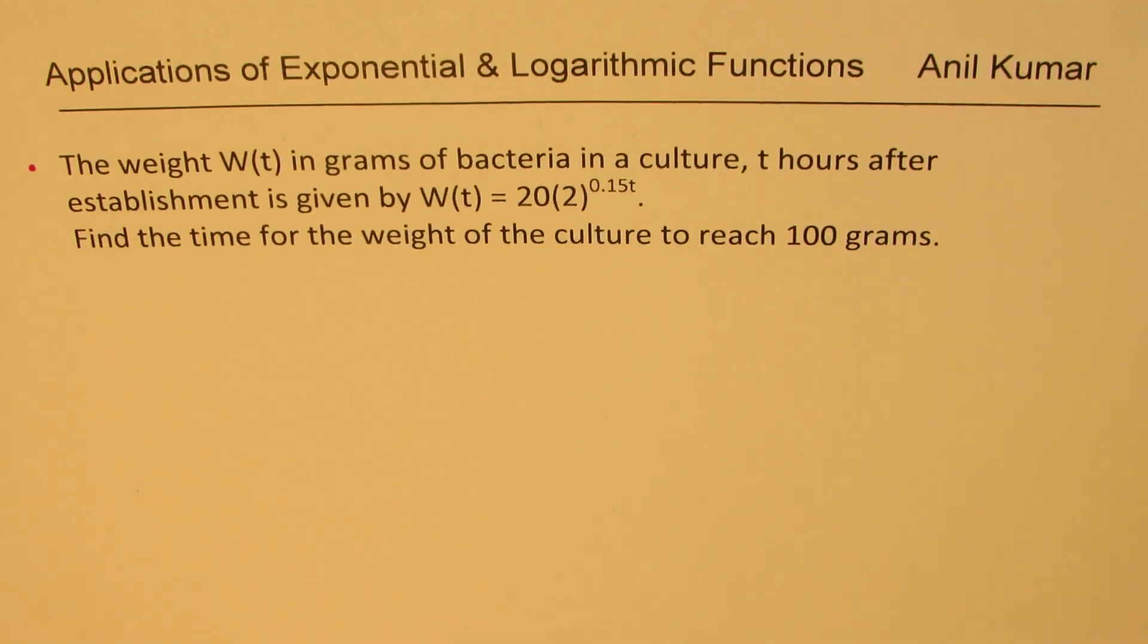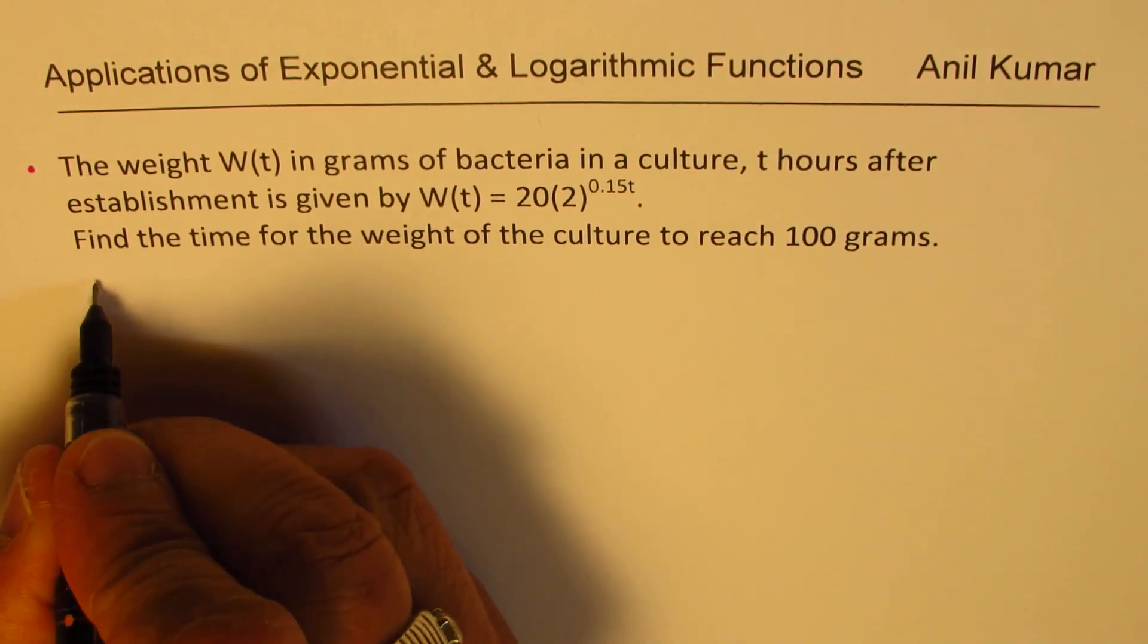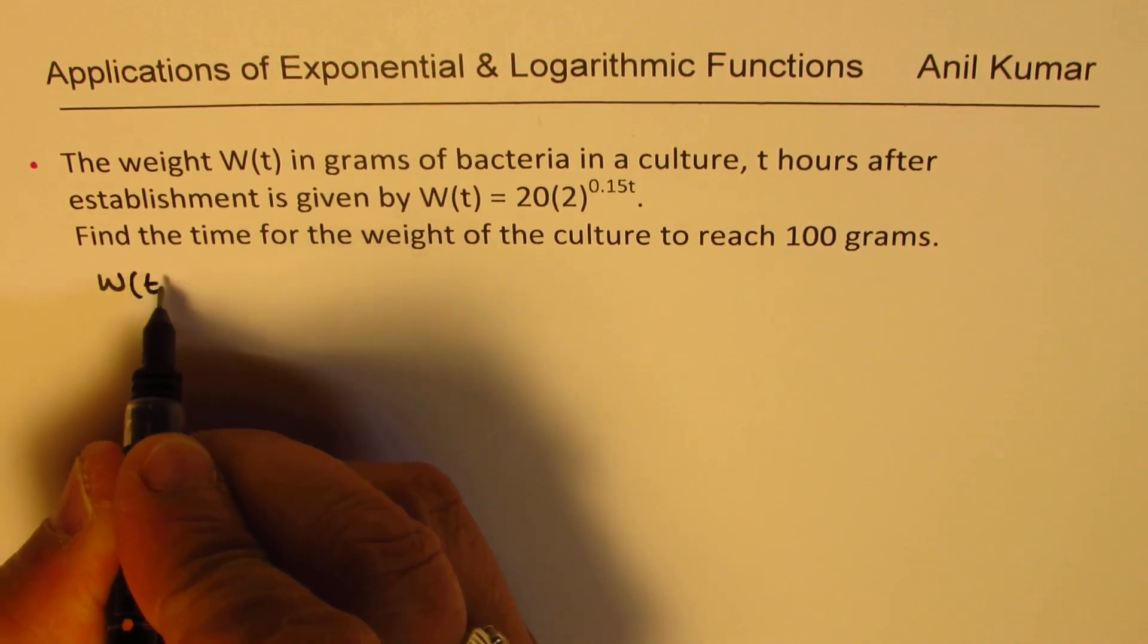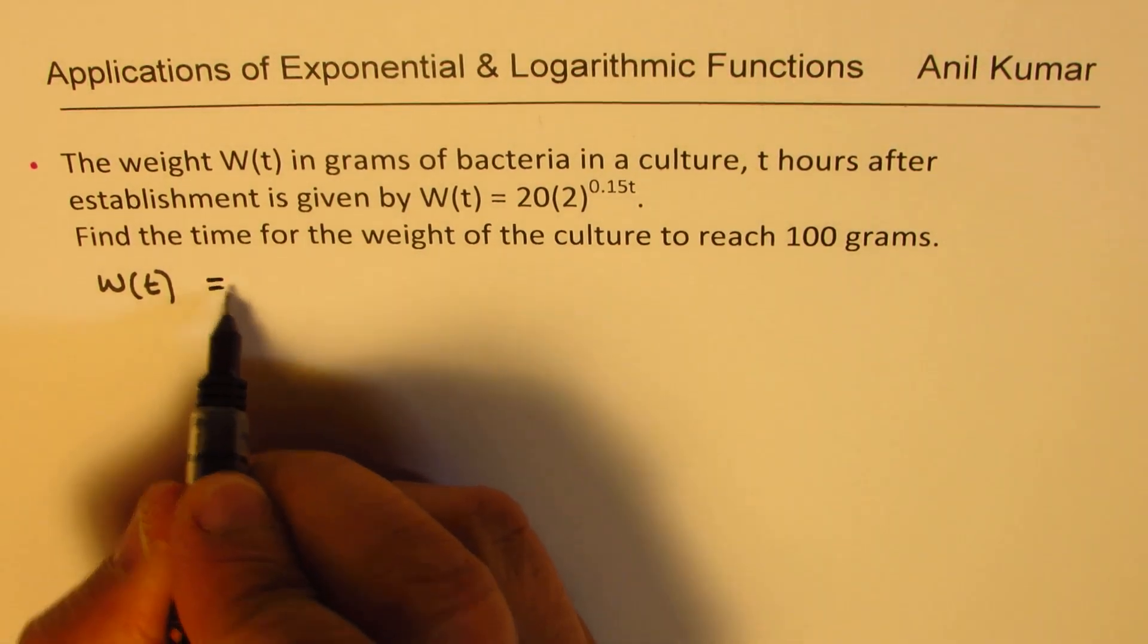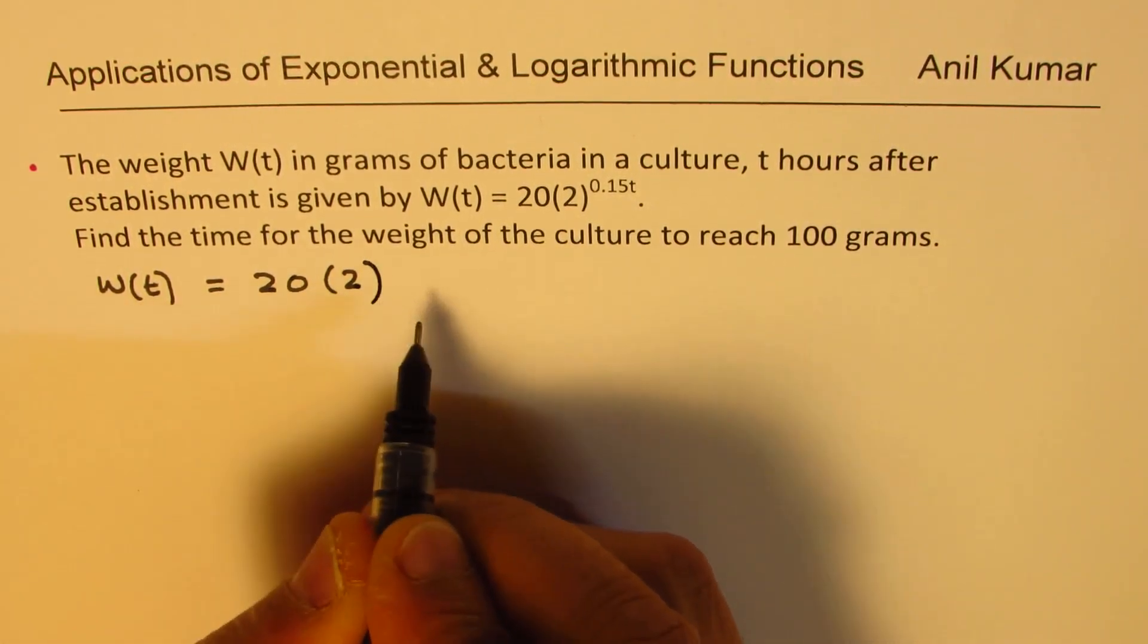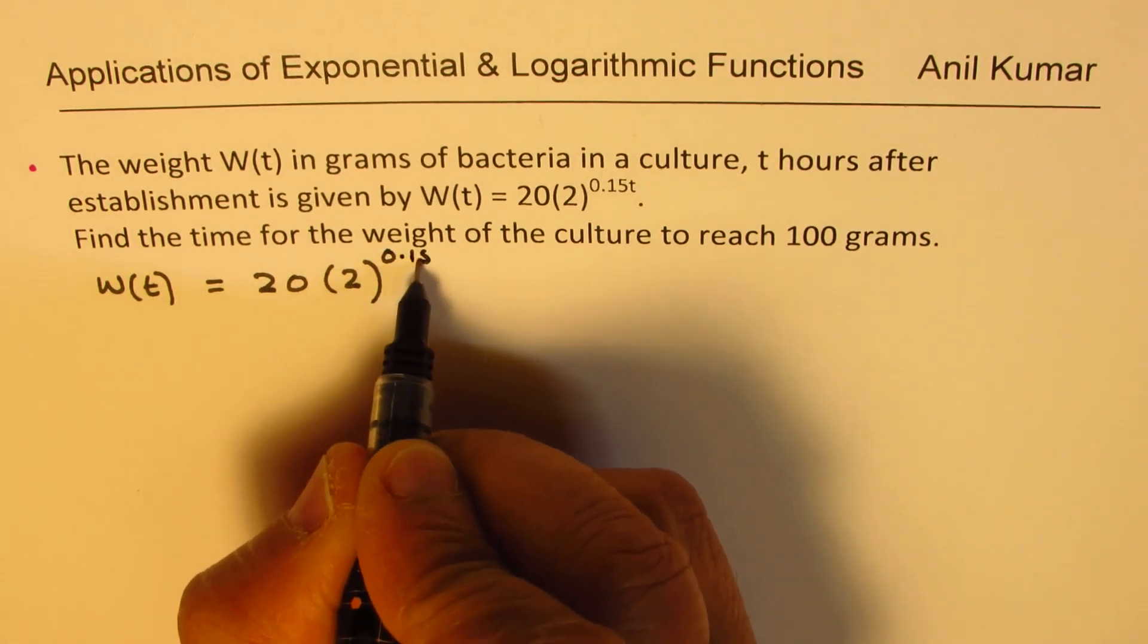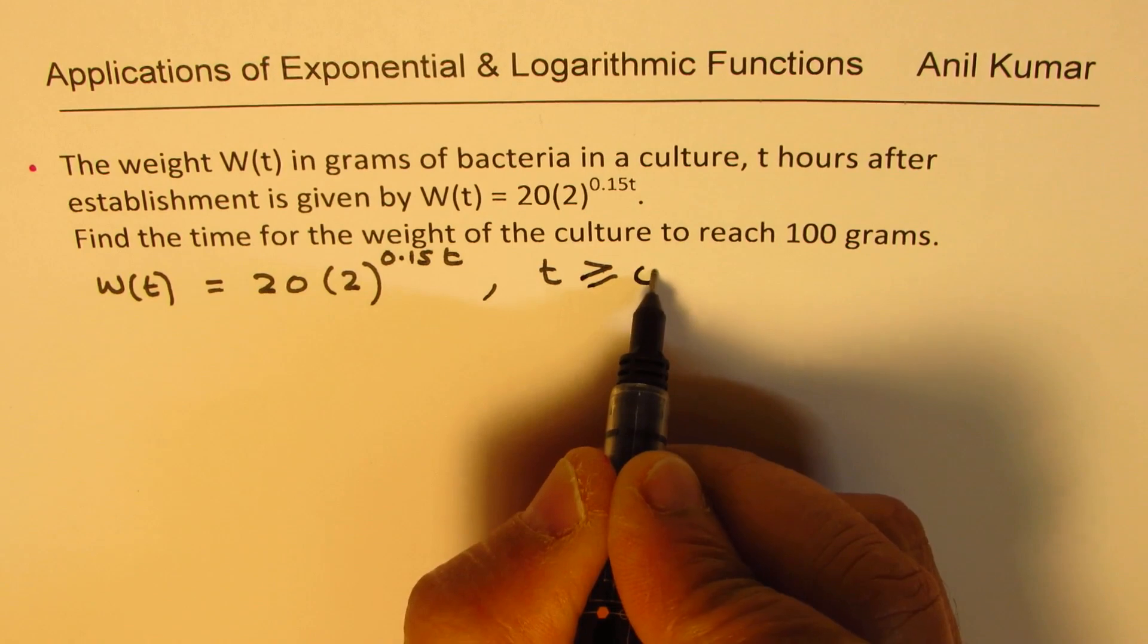Now let's solve this question and then we'll take the first one later. The concept is similar. Let's begin with the equation given to us, which is W(t) where t will be greater than or equal to 0 equals 20 times 2 to the power of 0.15t.